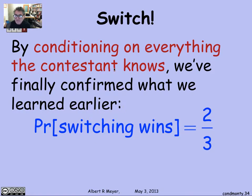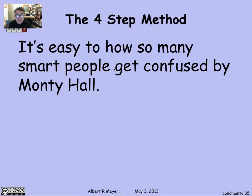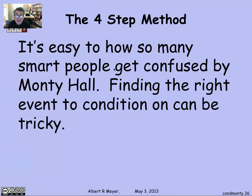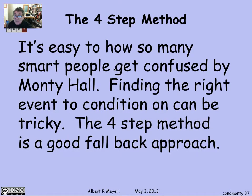We're not re-deriving that the probability of switching wins is 2/3 — we're illustrating a very basic blunder to watch out for: when reasoning about a situation, if you condition on an event that you think summarizes what's going on but don't get the conditioning event right, you'll get the wrong answer. It's easy to see how many people got confused, and finding the right event can be tricky. When in doubt, the four-step method of constructing the tree — where you examine individual outcomes without thinking about conditional probabilities directly — is a good fallback to avoid these confusing situations.